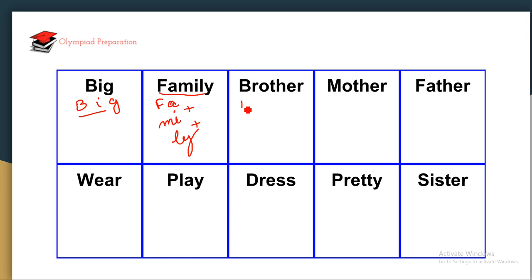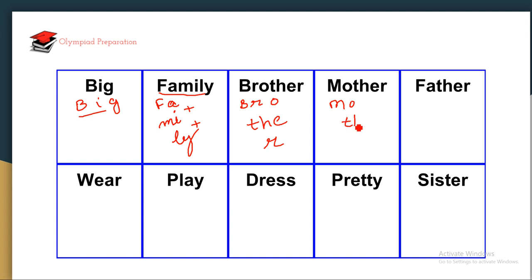Brother — BR + THER — brother. Mother — MA + THER — mother. Father — FA + THER — father.